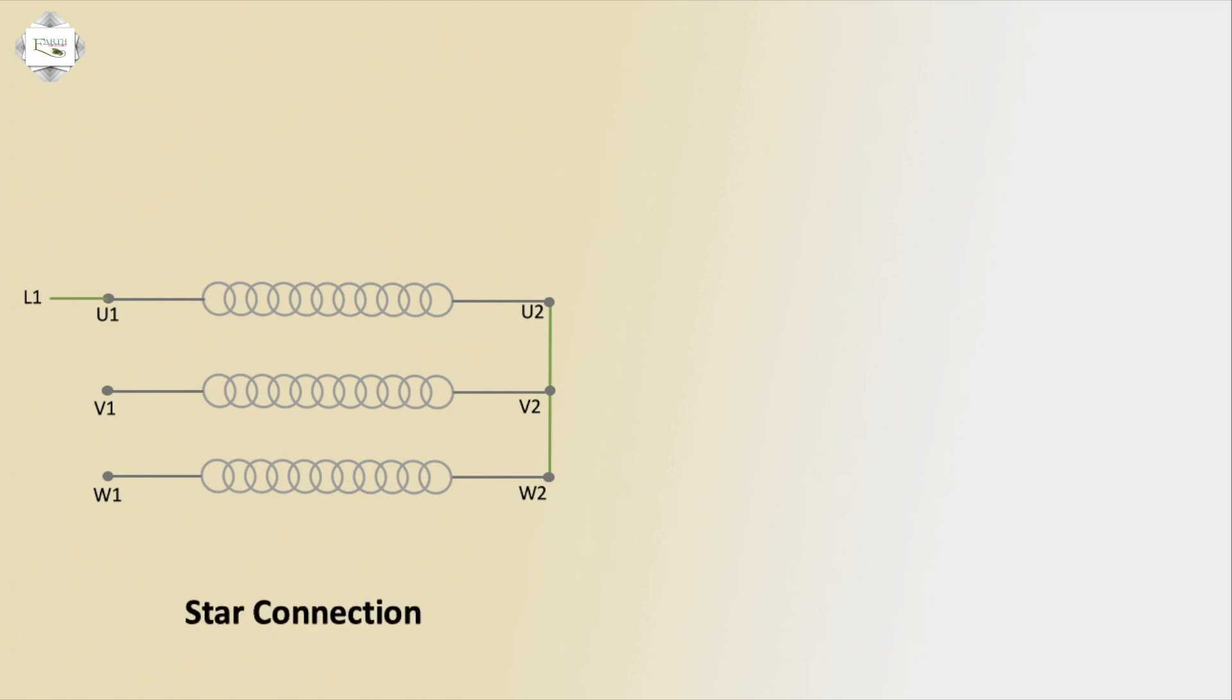Star connection: U1 connects to L1 first phase red, L2 second phase yellow connects to V1, L3 third phase blue connects to W1. This is the 3-phase star connection configuration for the motor.